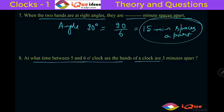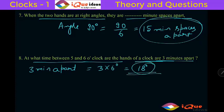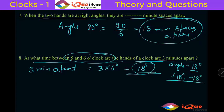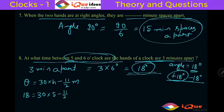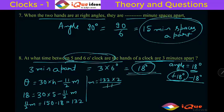At what time between 5 and 6 o'clock are the hands of a clock 3 minutes apart? Converting 3 minutes to angle: 3 into 6 degrees equals 18 degrees. The question becomes: when is the angle between the hands 18 degrees? Using the formula theta = 30h − (11/2)m with h = 5 and theta = +18: 18 = 150 − (11/2)m, so 11m/2 = 132, giving m = 24. The first time is 5:24.